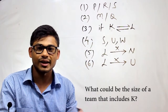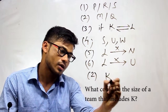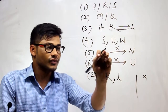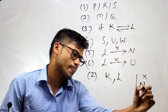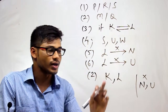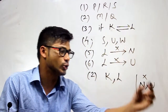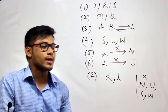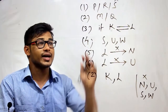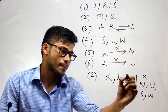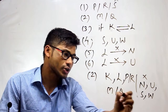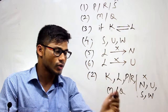Question two asks: what would be the size of a team that includes K? If I am including K, then I have to include L. Now, if I am including L, I cannot include N and U. According to the fourth condition, S, U and W must be chosen together, but since I cannot include U, I cannot include S or W. So I cannot choose S, meaning I have to choose either P or R to satisfy the first condition. To satisfy the second condition, I choose either M or Q. So there will be four members in this team: K, L, one of P/R, and one of M/Q.